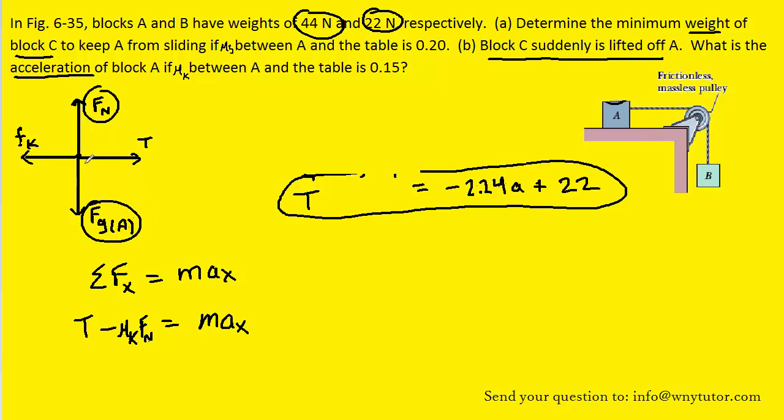There is no acceleration in the y direction, so these two forces balance each other out. In other words, their magnitudes are equal. So we can replace the normal force with FG for block A.